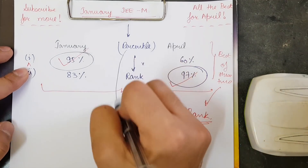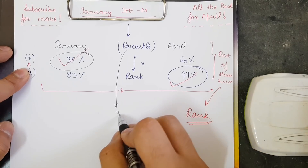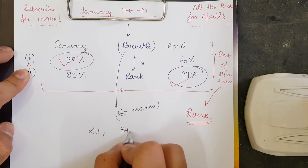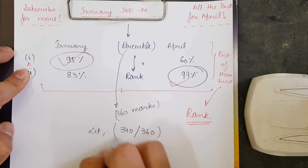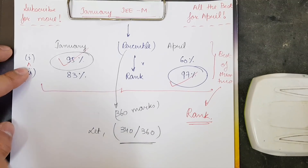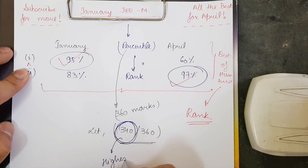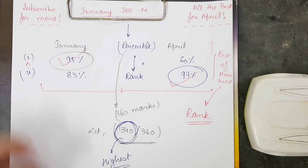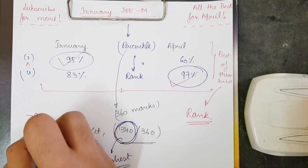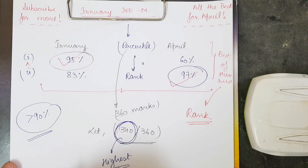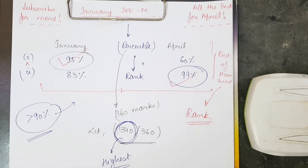I hope you understand what percentile means. The paper has 360 marks total. Let us say the topper got 340 out of 360 marks — those 340 marks are taken as the highest marks, with respect to which all calculations are performed. For general category students, if you are getting greater than 90 percentile, you are in a very safe zone, because it means you have performed better than 90 percent of the people who gave the examination.